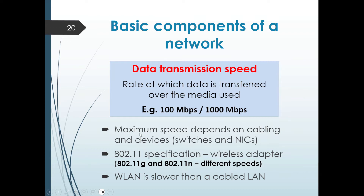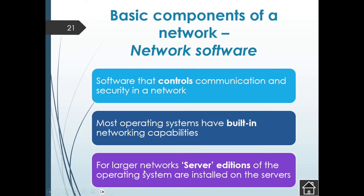When you see specifications on a wireless adapter — for example, 802.11g — that indicates the speed that particular wireless standard supports, meaning your wireless adapter will transfer data at that speed. Just understand that your wireless LAN is going to be slower than your cable LAN, and this has to do with the consistency of the signal.